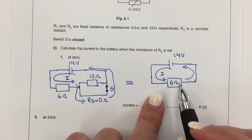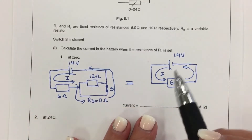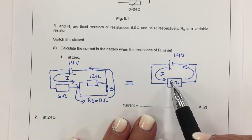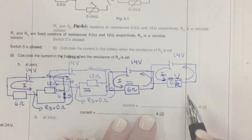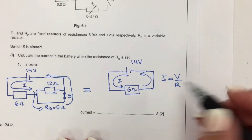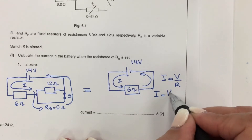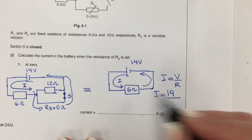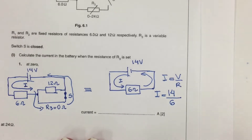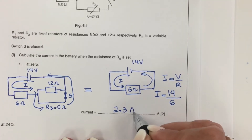This simplified circuit shows that the current flows through 6 ohms and not through 12 ohms, then returns to the battery. Using Ohm's law to calculate the current: V is 14 volts and resistance is 6 ohms, so current is 2.3 amps.